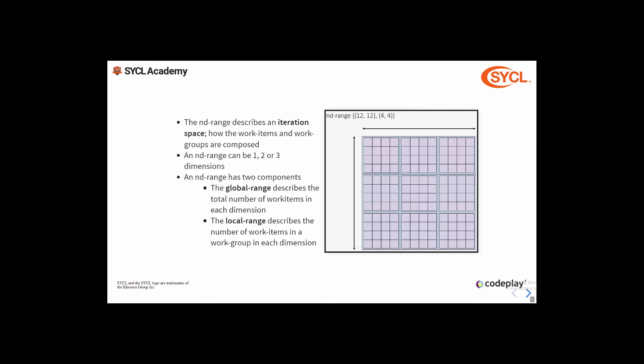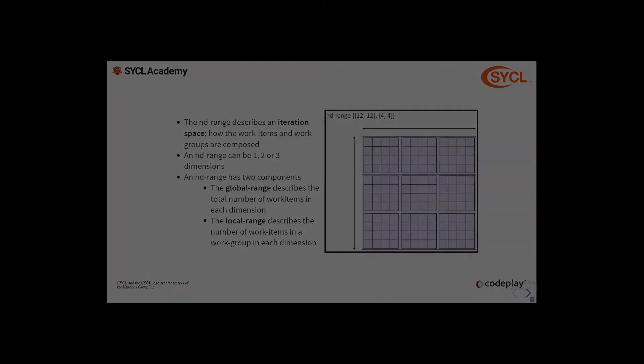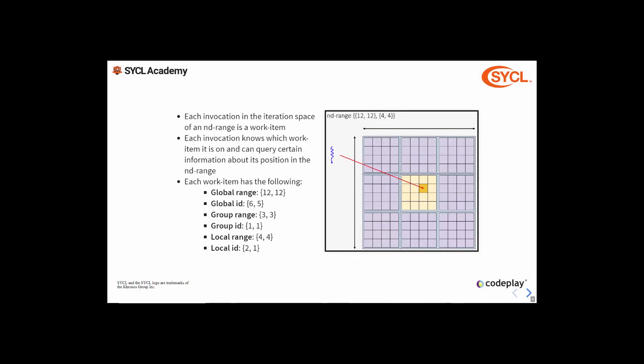Here we have an example of a two-dimensional ND range. An ND range has two main components: first there's the global range, which describes the total number of work items in each dimension — in this example the global range is 12 by 12. Then there's the local range, which describes the number of work items per work group in each dimension — in this example the local range is 4 by 4. So this gives us a total iteration space of 12 by 12 work items, thus evenly subdivided into 4 by 4 work groups. The global range must always be equally subdivisible by the local range. When you enqueue a kernel function over an ND range, that function will be invoked exactly once per work item in the iteration space.